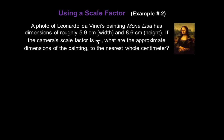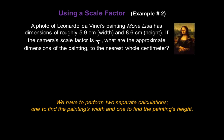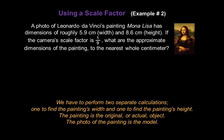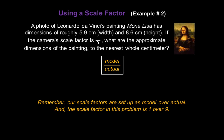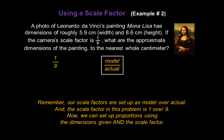A photo of Leonardo da Vinci's painting, Mona Lisa, has dimensions of roughly 5.9 centimeters in width and 8.6 centimeters in height. If the camera's scale factor is 1/9, what are the approximate dimensions of the painting to the nearest whole centimeter? We need to perform two separate calculations — one to find the painting's width and one to find its height. The painting is the actual object and the photo is the model. Remember, scale factors are set up as model over actual, and the scale factor here is 1 over 9.